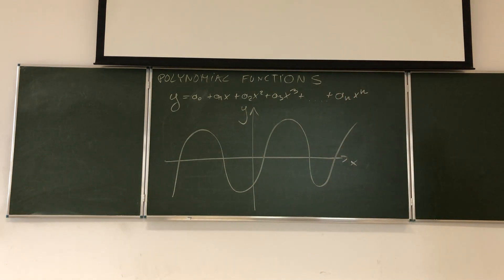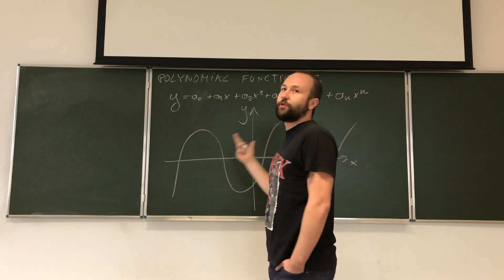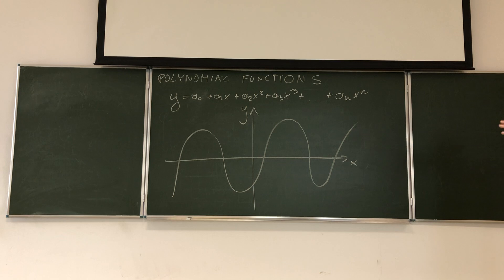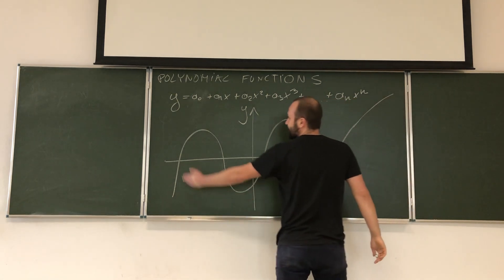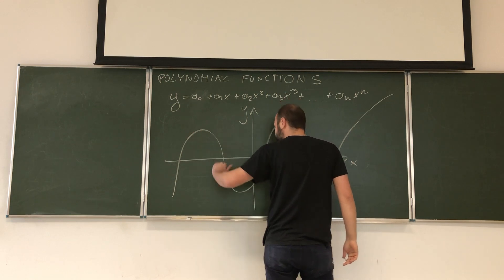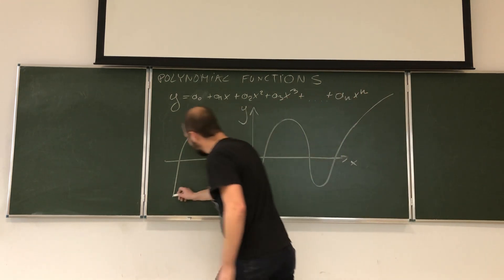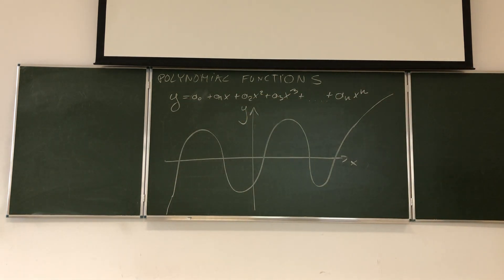Depending on the degree of the polynomial and the configuration of all the coefficients, those functions look something like this. So they have these hills and valleys, hills and valleys, and of course at the end they're usually on one hand going to infinity, on the other to negative infinity.